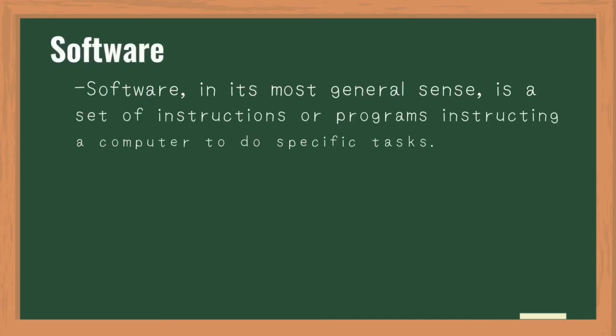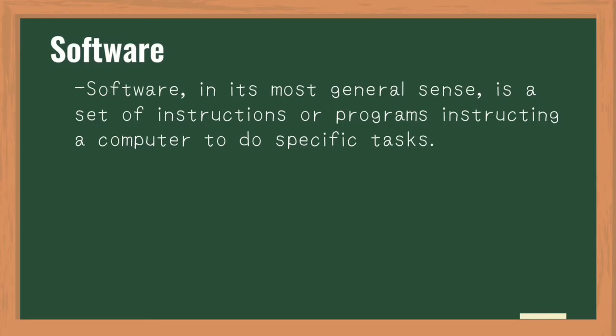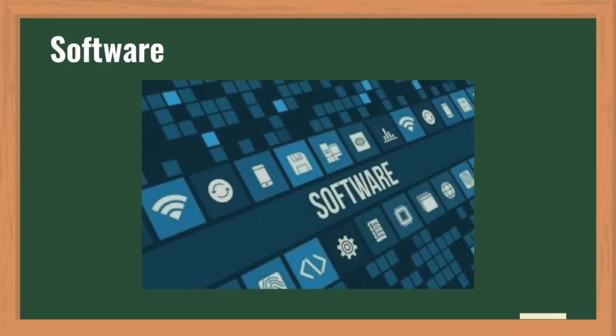Now let's get into software. Software, in its most general sense, is a set of instructions or programs instructing a computer to do specific tasks. Software is a generic term used to describe computer programs that run on PCs, mobile phones, tablets, or other smart devices.